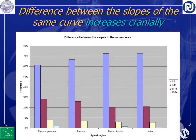The difference between the slopes of the same curve increased cranially. So in the proximal thoracic curves there is no difference below 5 degrees, while more than 5 degrees differences increase as you go cranially, as you can see.